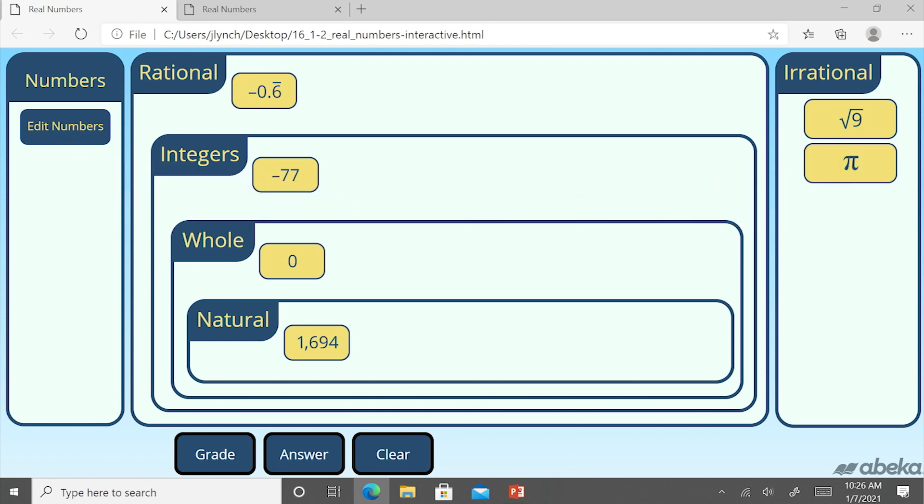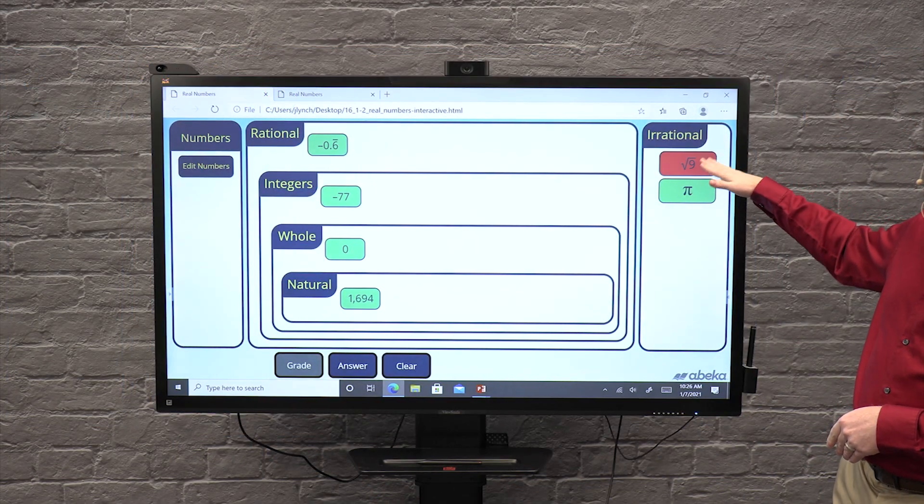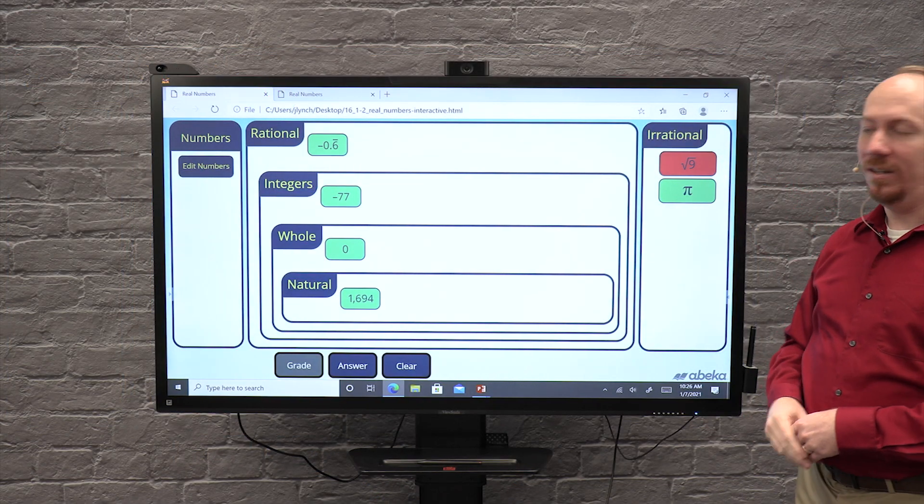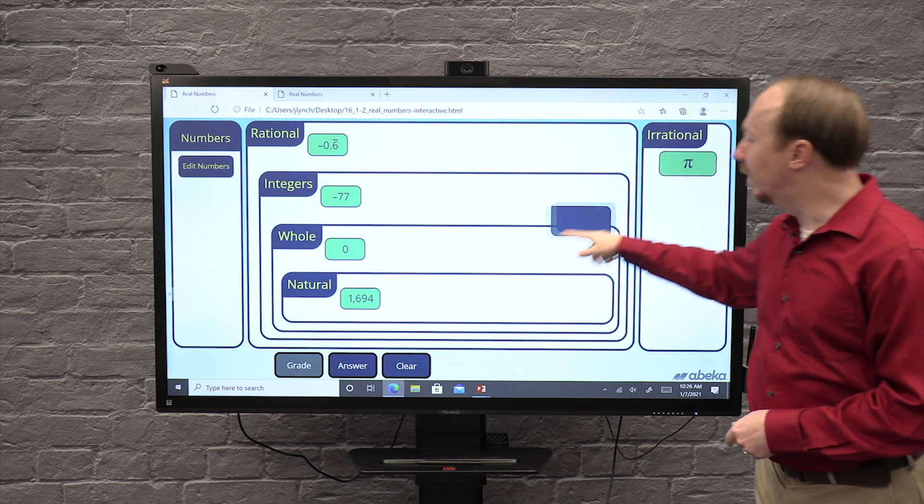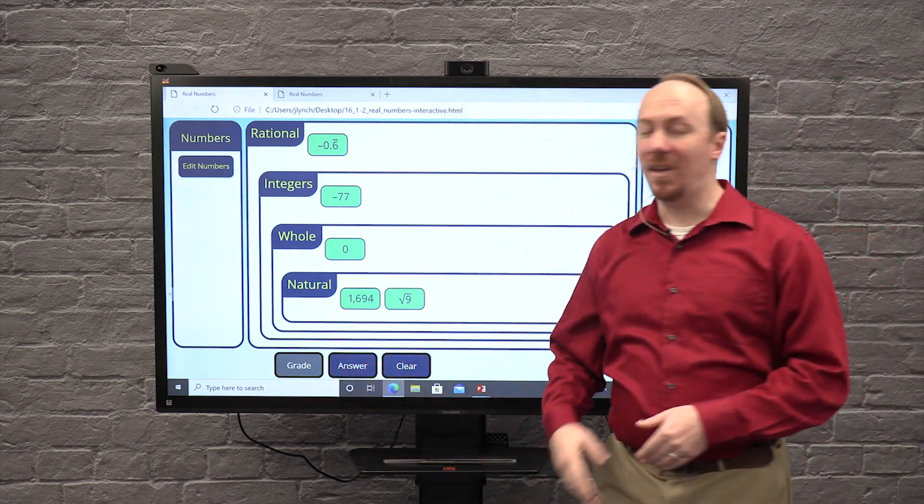Then you, as the teacher, can say, okay, how did we do class? Let's check. We hit our grade button right there, and we can see, hey, we did a pretty good job, but we've got one that's wrong here. We've got the square root of nine over here that's marked as wrong. Class, why is that incorrect? Well, square root of nine comes out evenly. It's back over here. We can check again and see that we got all of them correct.